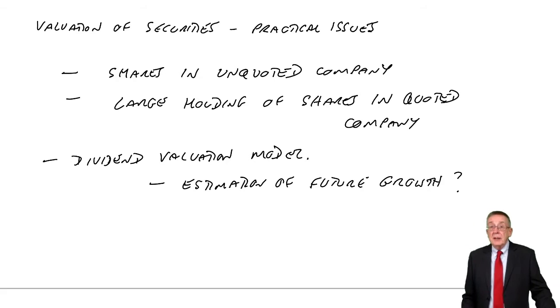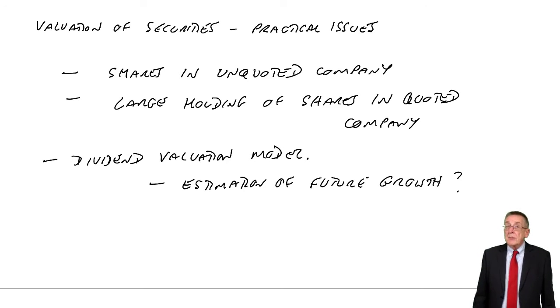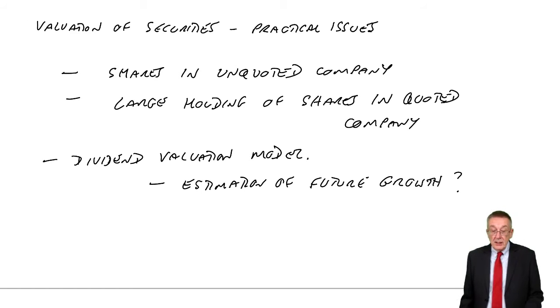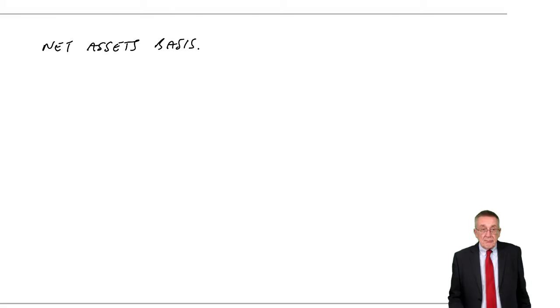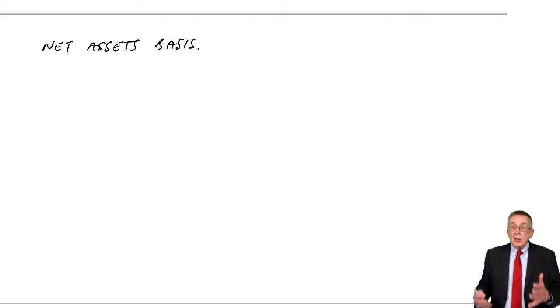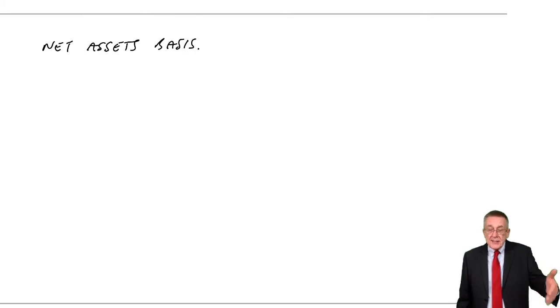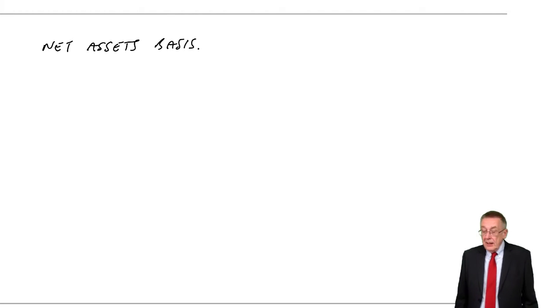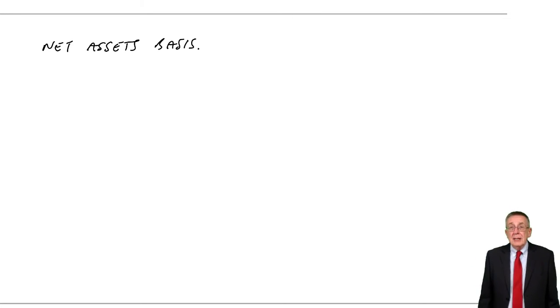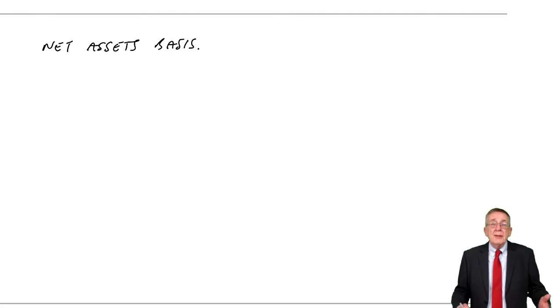And so from a practical point of view, there are two other approaches we may look at and which certainly would be looked at in deciding on a market value. Over the page, the first is what we call the net assets basis, where it means exactly what it says. We look at the value of the net assets, assets minus liabilities on the statement of financial position, and divide by the number of shares. But how much are the assets worth? The net assets are worth 500,000, there are 10,000 shares in issue, divide through, that comes to $5 a share.